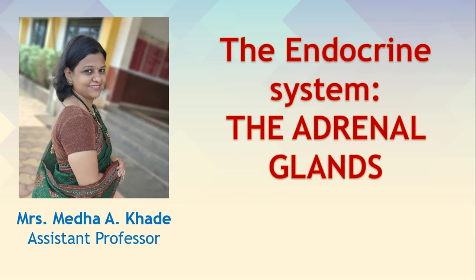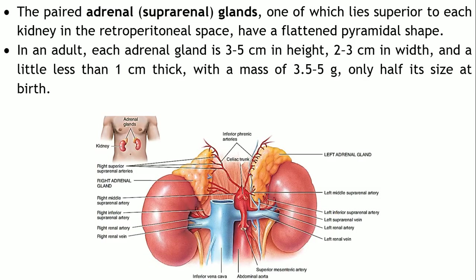Welcome back. Continuing with the endocrine system, we now consider the adrenal glands. These are paired in nature and are also known as suprarenal glands — 'suprarenal' meaning superior to the kidney. Located just superior to each kidney, there are two: the left adrenal gland and the right adrenal gland.